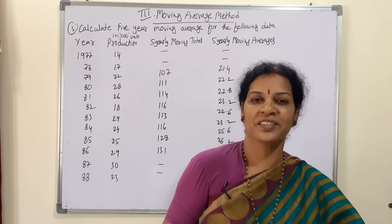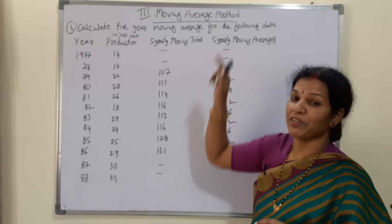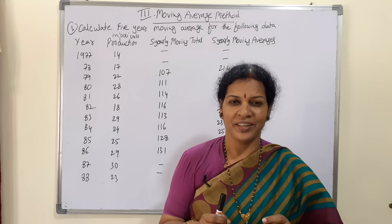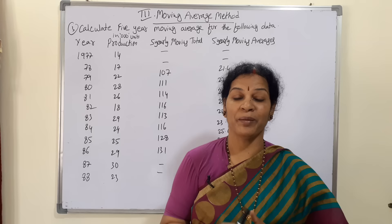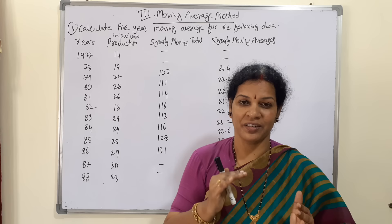Hello dear students, in time series we are discussing the first two methods which are over now. Coming to the third method, that is the moving average method. This is very easy and easy to score. Moving average means for every year we will be taking averages by moving year by year.